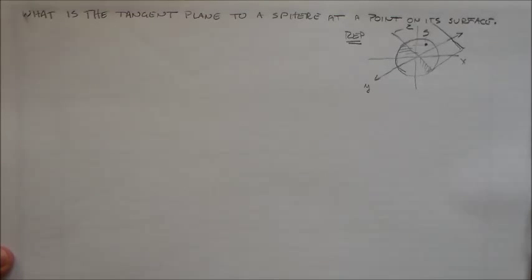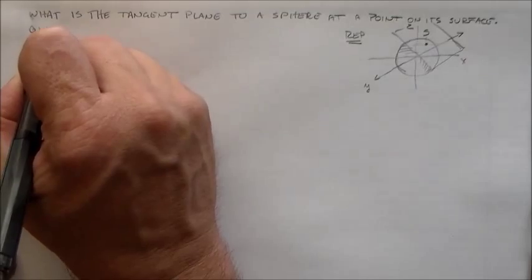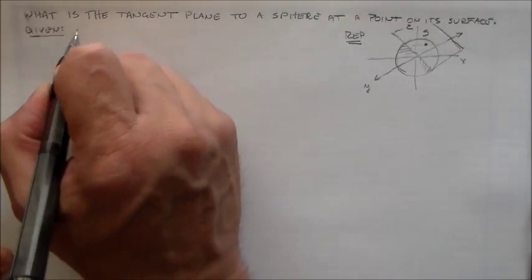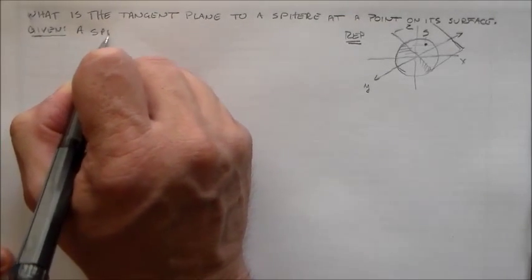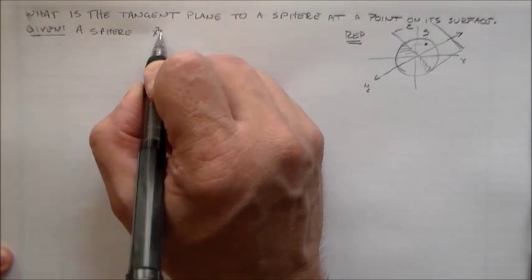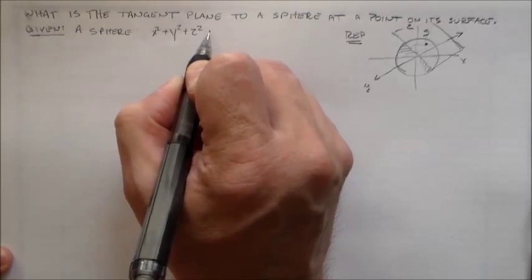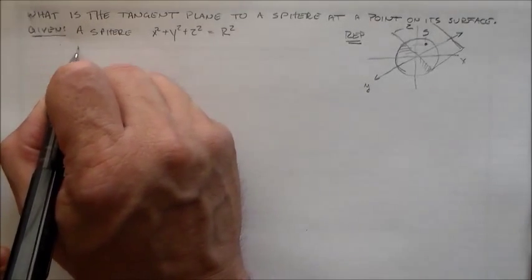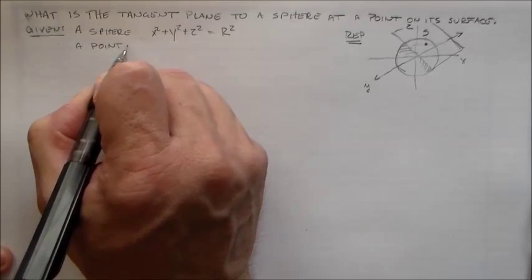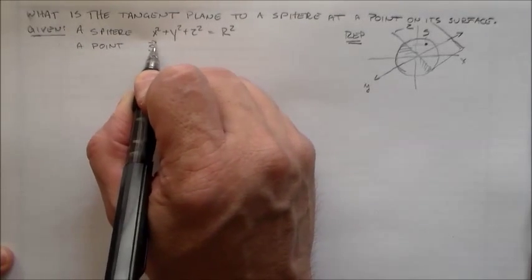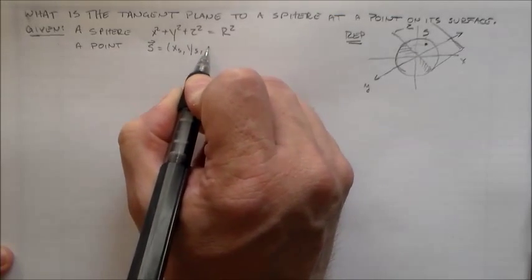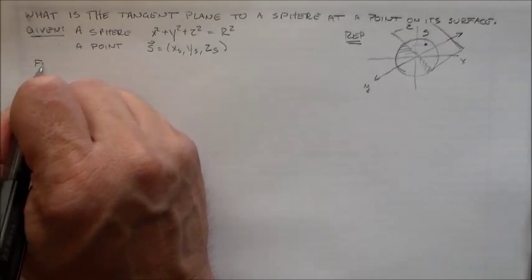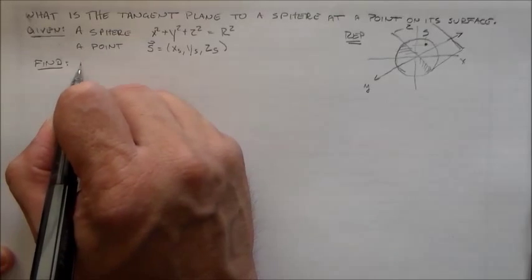I'll place the sphere at the center of my coordinate system — X, Y, and Z. The things I need to know are that I have a sphere described by the equation X squared plus Y squared plus Z squared equals R squared. And then I'm given a point on the sphere, and that point is going to be S equals (Xs, Ys, Zs). I want to find the tangent plane through S.